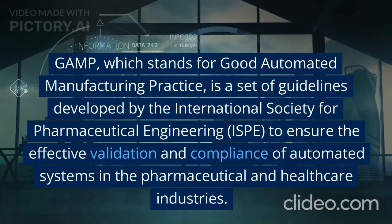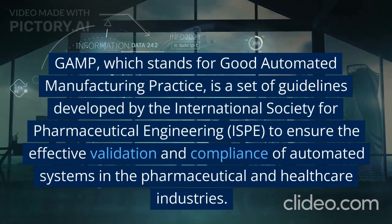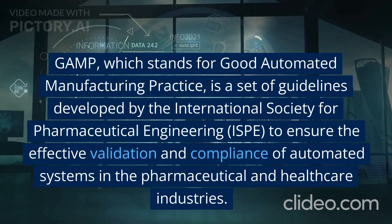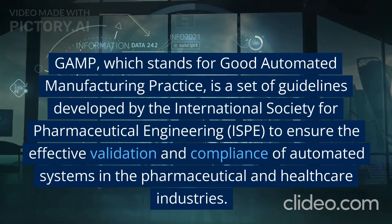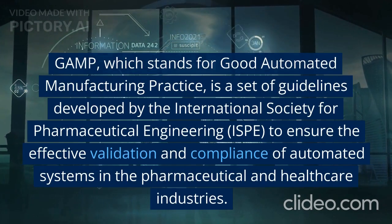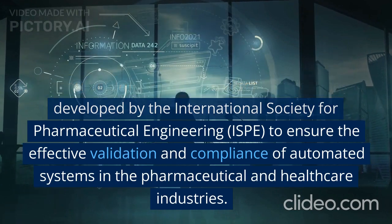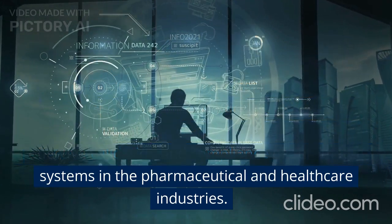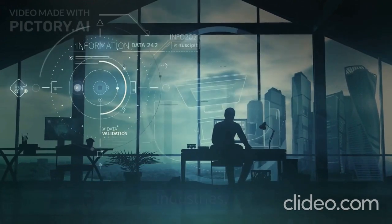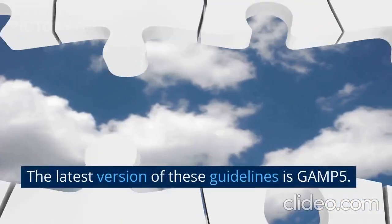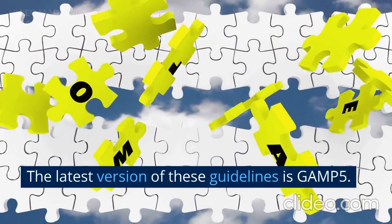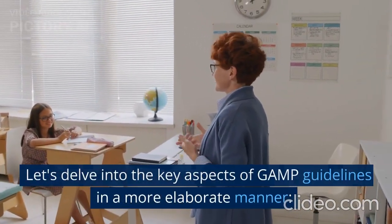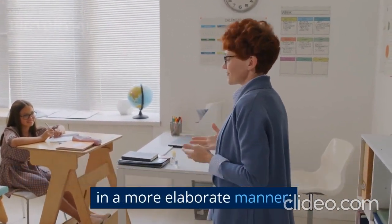GAMP, which stands for Good Automated Manufacturing Practice, is a set of guidelines developed by the International Society for Pharmaceutical Engineering (ISPE) to ensure the effective validation and compliance of automated systems in the pharmaceutical and healthcare industries. The latest version of these guidelines is GAMP5.